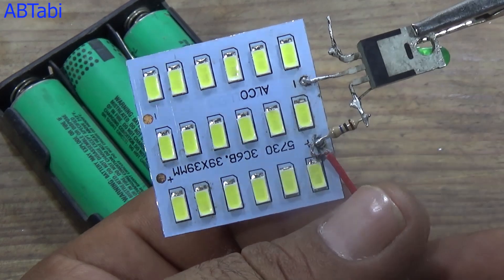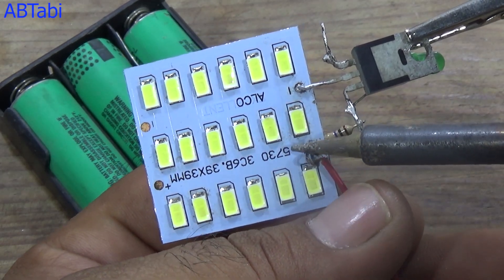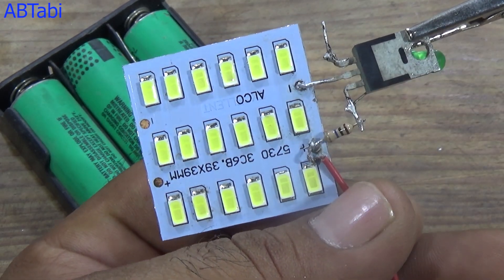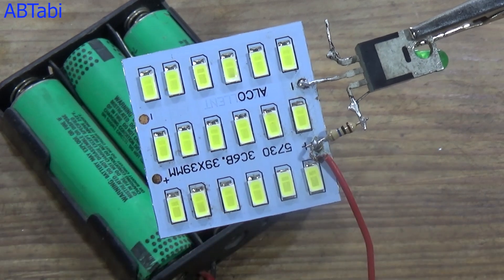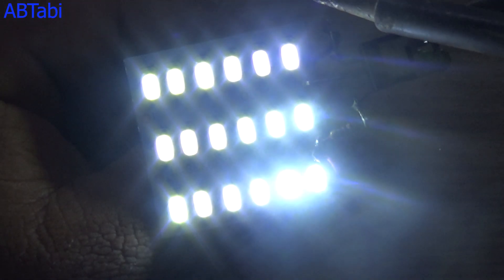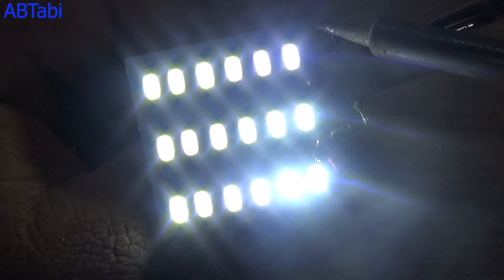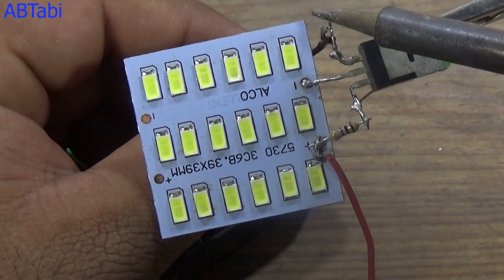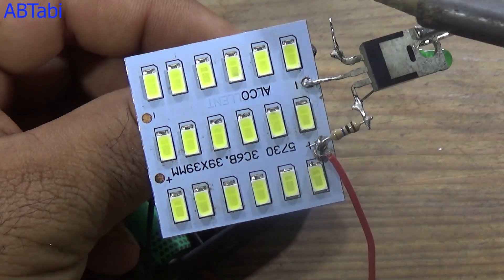We connect a 12 volt battery with the circuit. Positive supply connects to LED light positive side and MOSFET. Negative supply wire connects with MOSFET source pin. Our circuit is complete and ready for test.